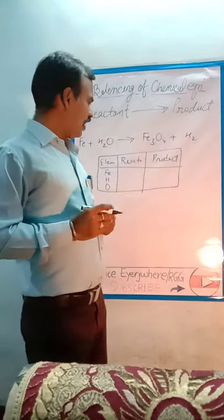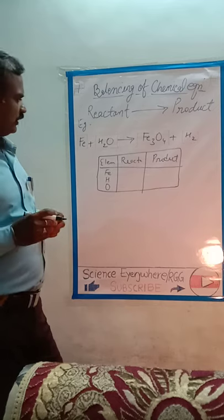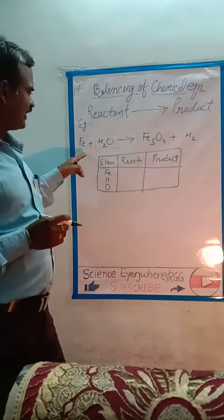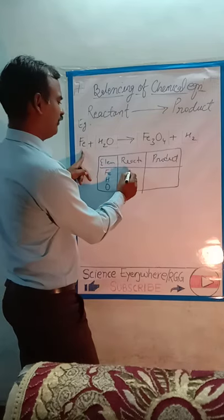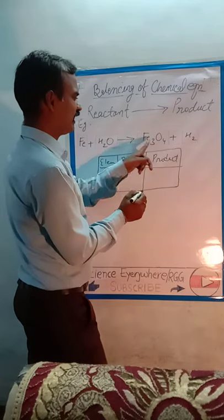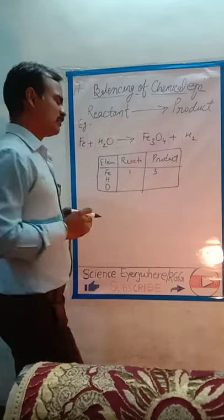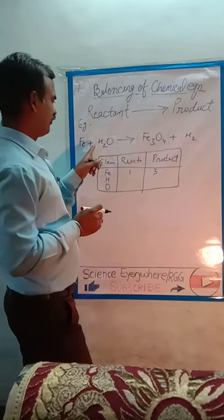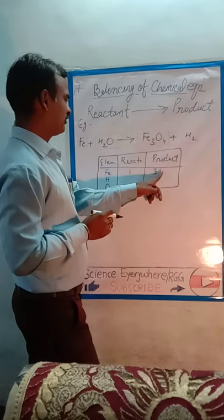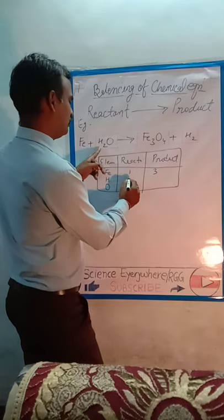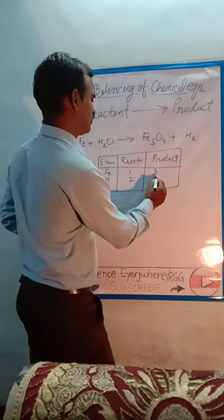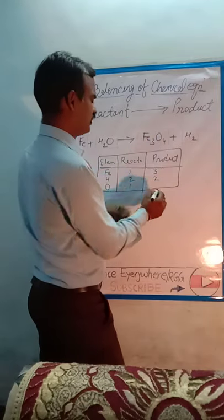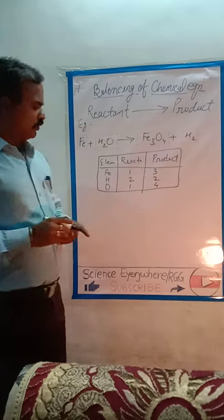On the reactant side, the number of iron atoms is one, and on the product side it is three. Write the number of each element: iron one vs. three, then hydrogen two on the reactant side.